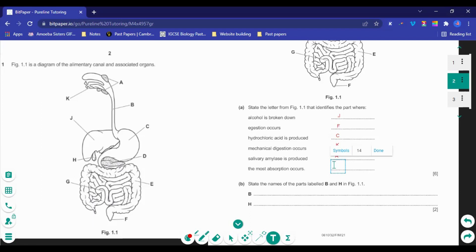Next, state the names of the parts labeled B and H. B represents that part of the tube leading from the mouth into the stomach. This is our esophagus.